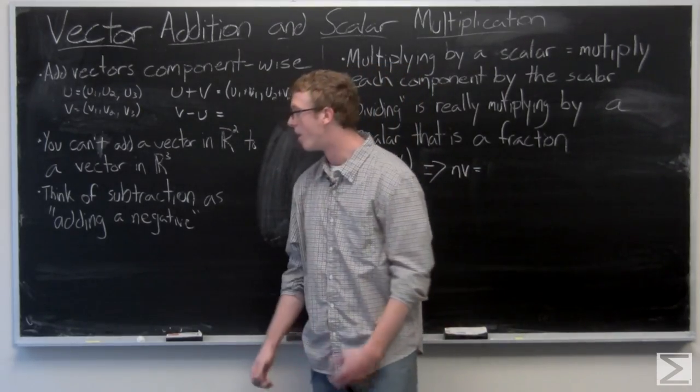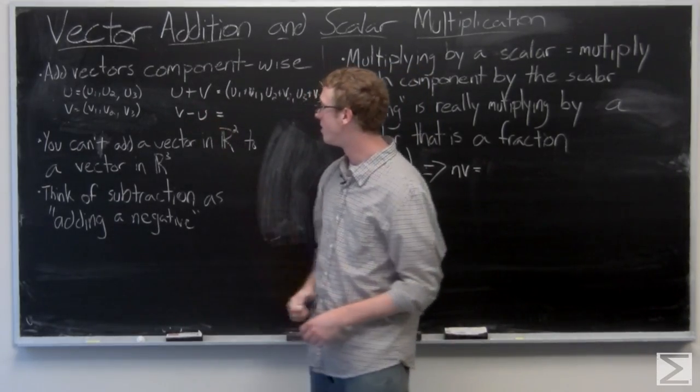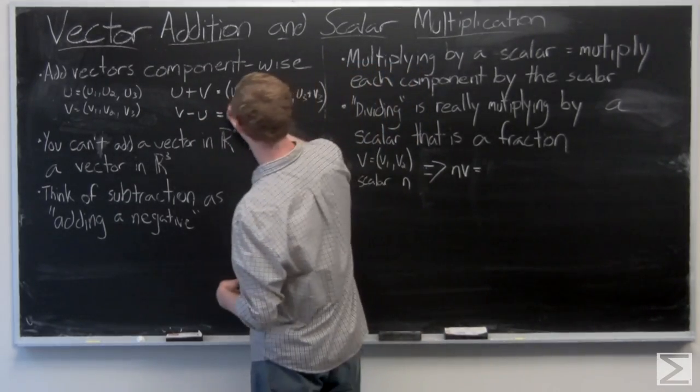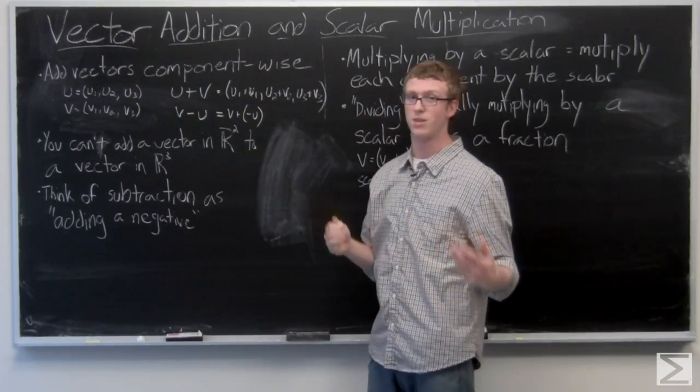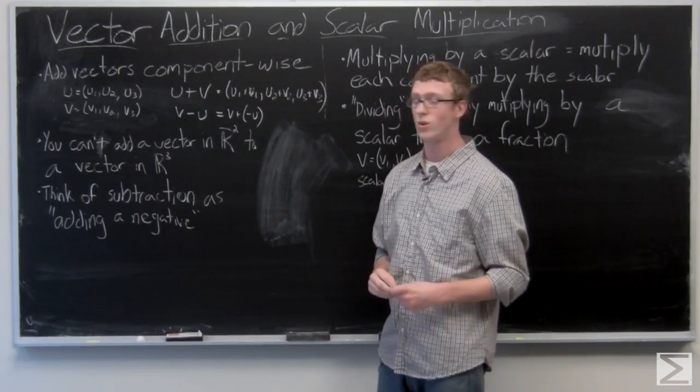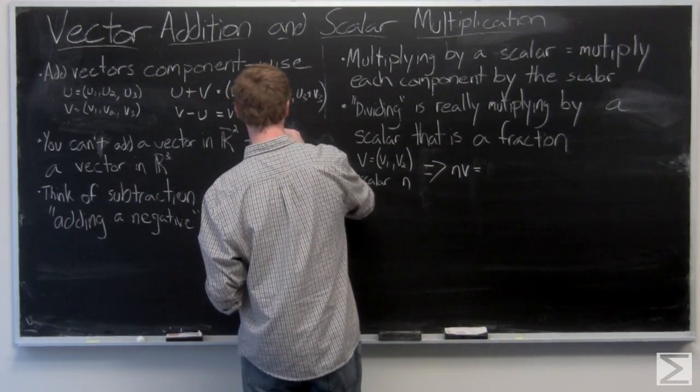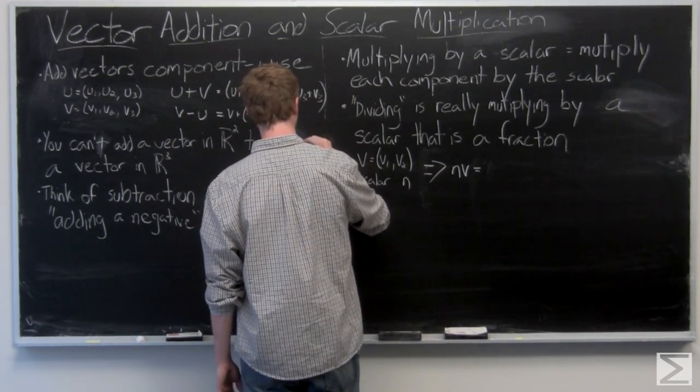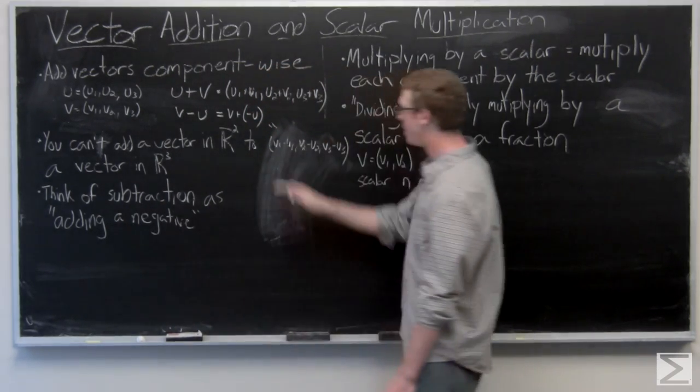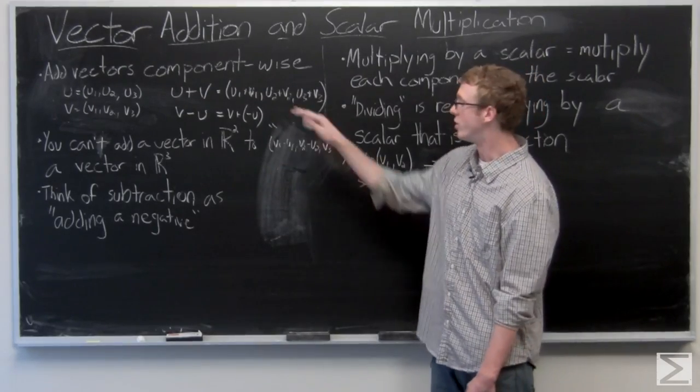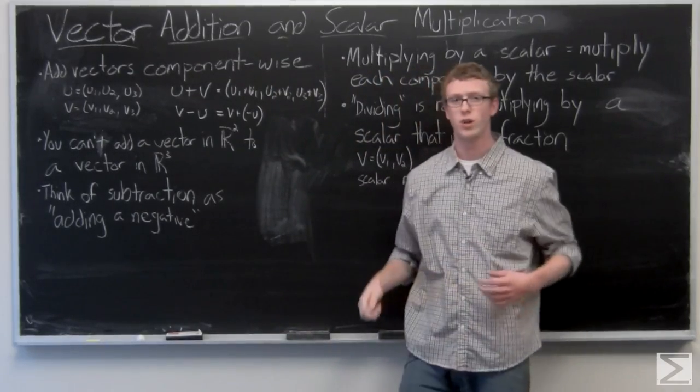And we want to think of subtraction of vectors as adding a negative. So I have v minus u here. Instead of v minus u, we're going to do v plus negative u, and then negative u is just going to be negative u1, negative u2, and negative u3. So this is our result in vector when you do v minus u.